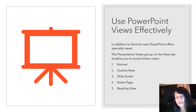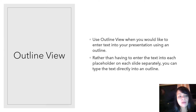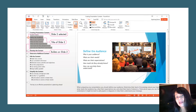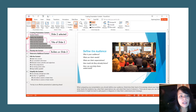Use the outline view when you want to enter text into your presentation using an outline. Instead of entering text onto each placeholder on each slide separately, you can type the text directly into the outline. In the outline view, you have the outline on the left-hand side and you can go from slide to slide very easily and quickly.